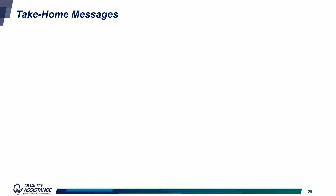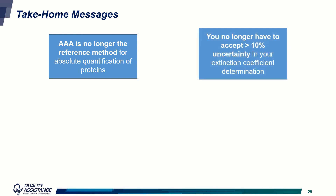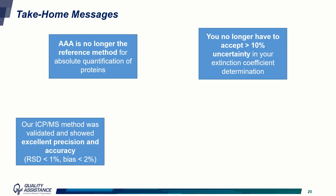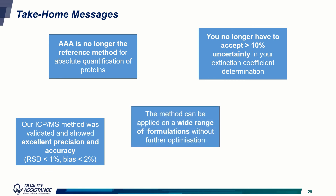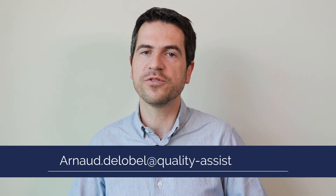Some take-home messages: Amino acid analysis is no longer the reference method for the absolute quantification of proteins — you no longer have to accept 10% uncertainty or more in your extinction coefficient determination. Our ICP-MS method was validated and showed excellent precision and accuracy. The method can be applied on a wide range of formulations without further optimization, and can be run in a full GMP environment. I hope you will be convinced that you can no longer trust AAA and need to switch to ICP-MS. Please don't hesitate to contact me by email if you have any questions or comments.